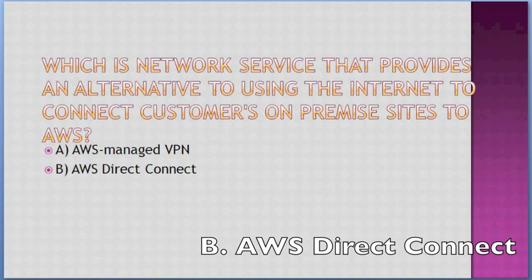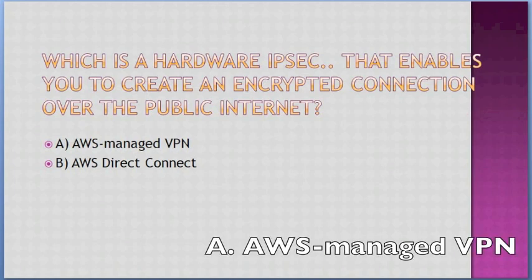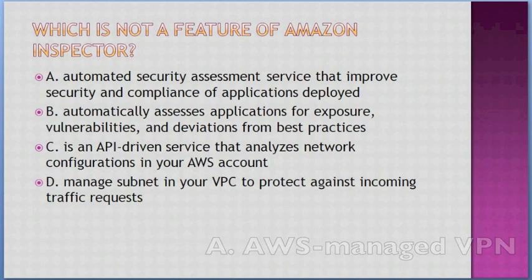Which is a hardware IPSec option that enables you to create an encrypted connection over the public internet? Options: A. AWS Managed VPN, B. AWS Direct Connect. Answer: A — AWS Managed VPN.